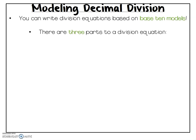A quick refresher: when we write a division equation we have three parts. First is the dividend and that's divided by the divisor which gives us our answer or our quotient.